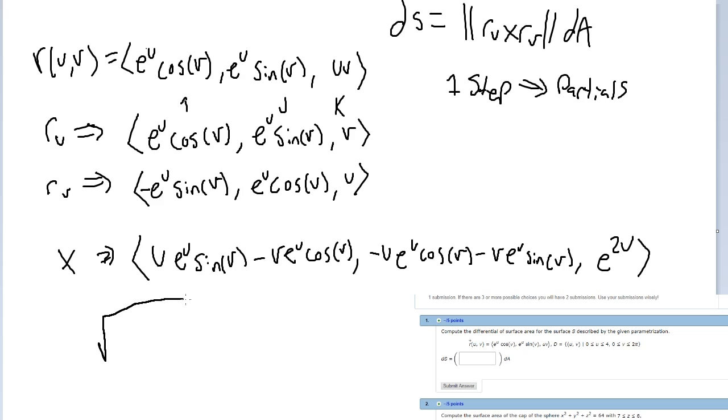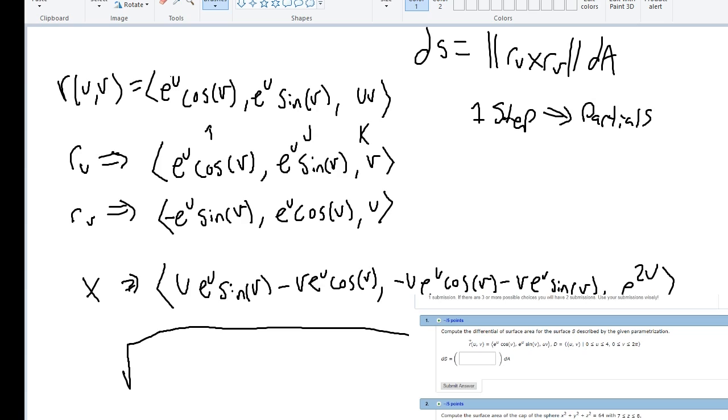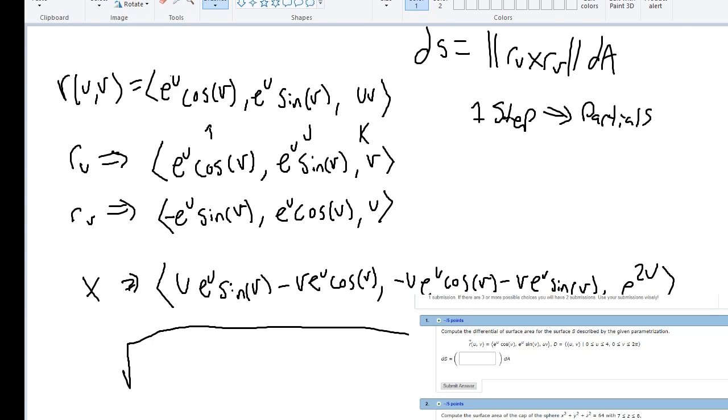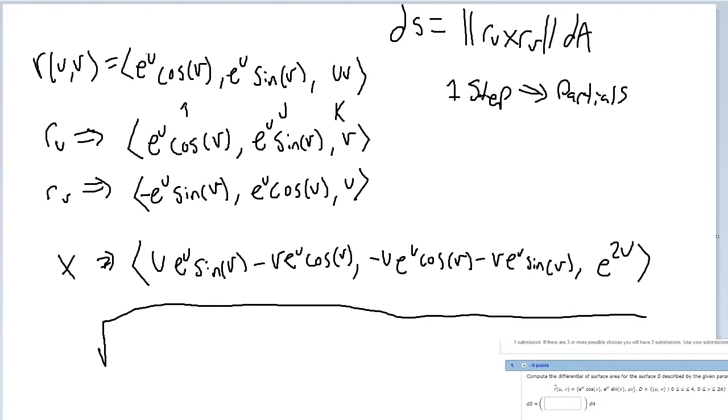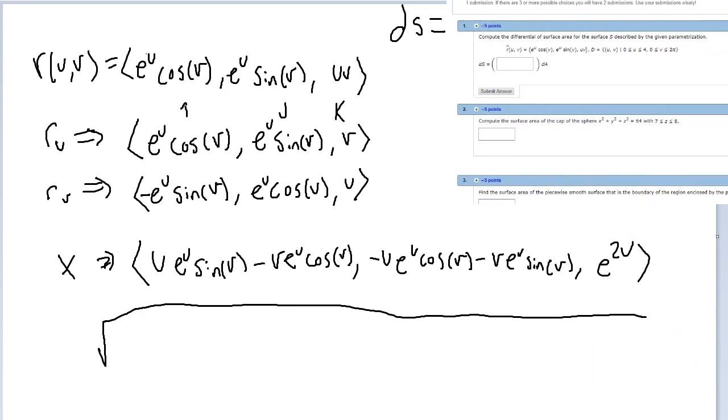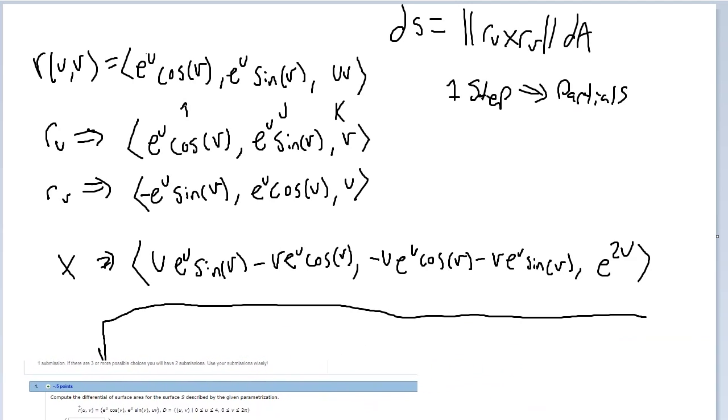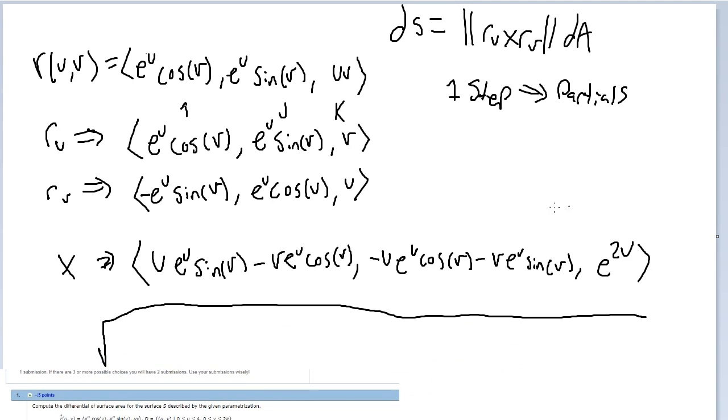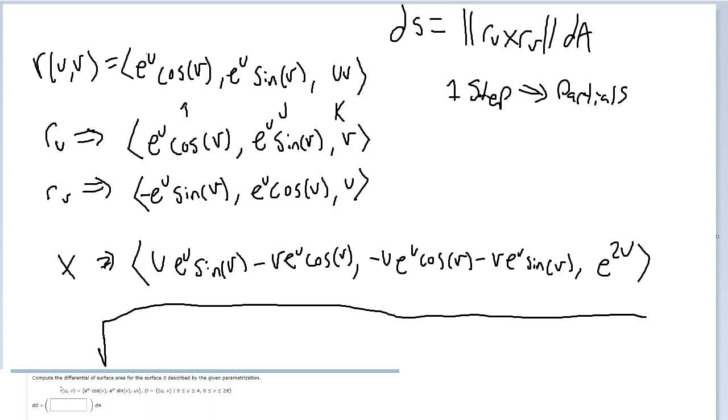So that's our cross product and now we need a magnitude of our cross product. So it's gonna be square root. Let me go ahead and make it big. I'll go ahead and move this problem down or over here or something. Let me just scroll down on the page.